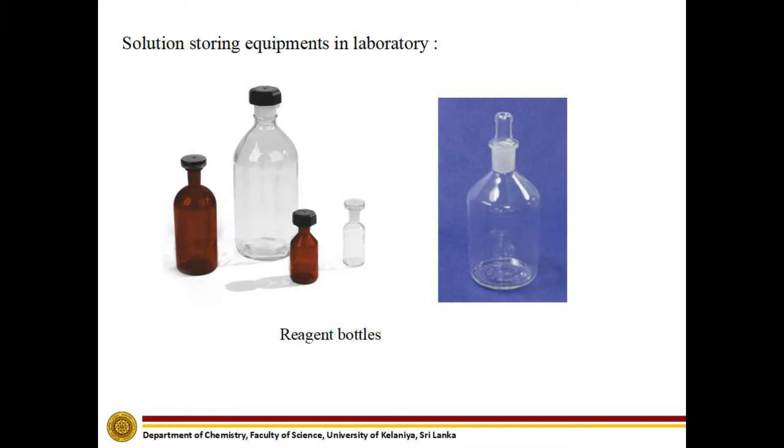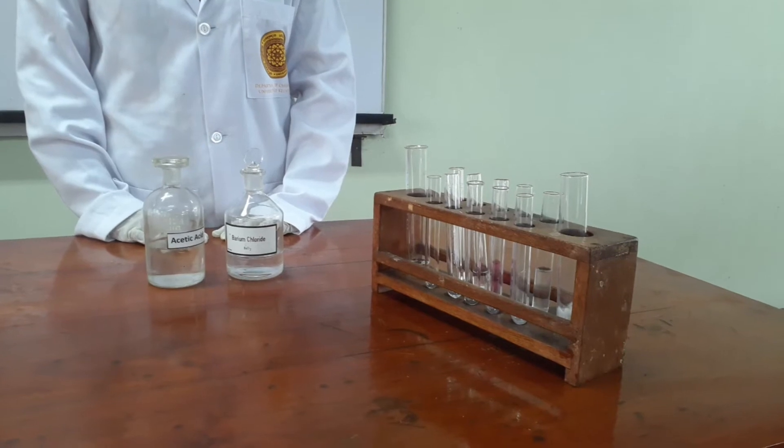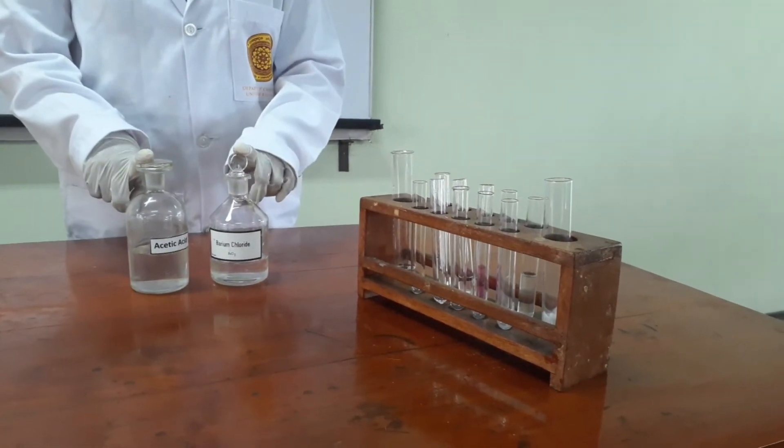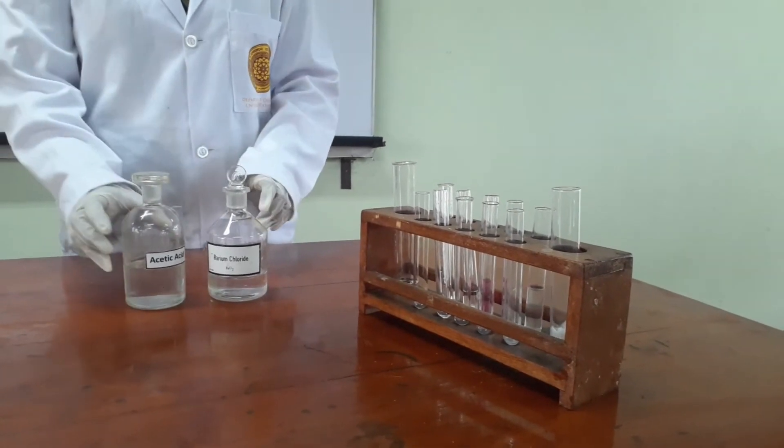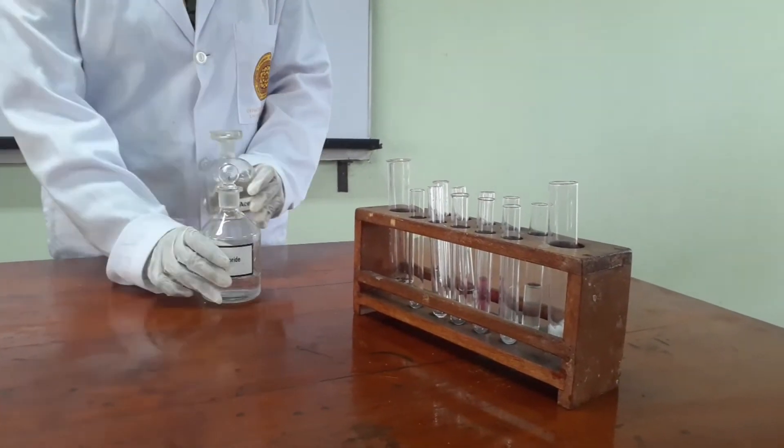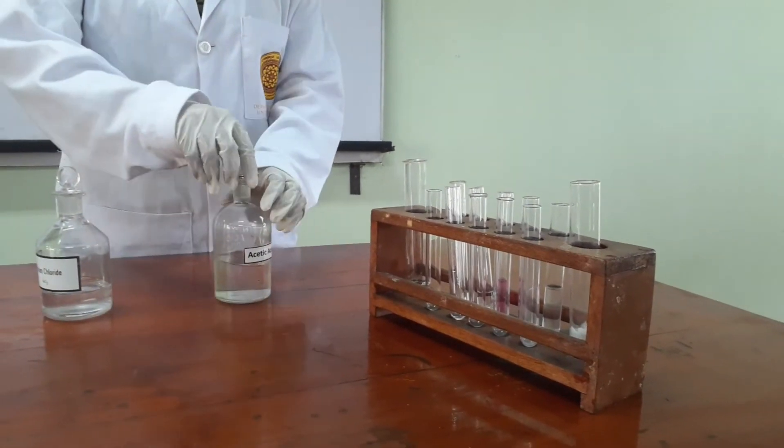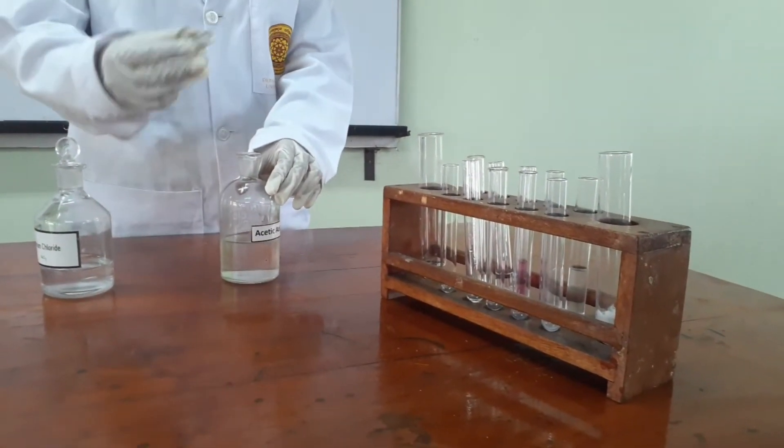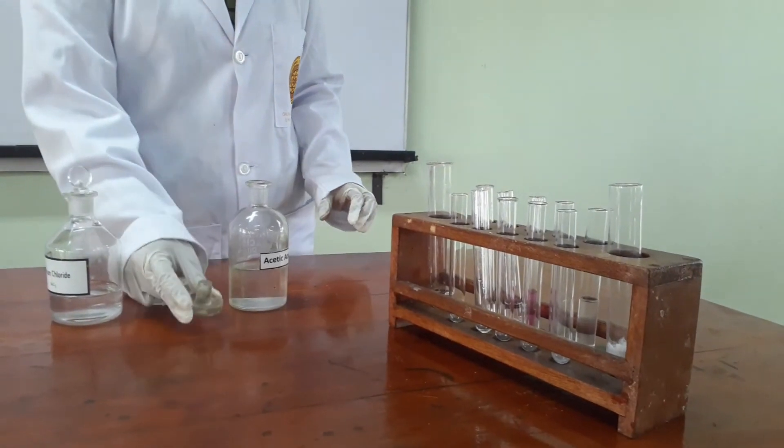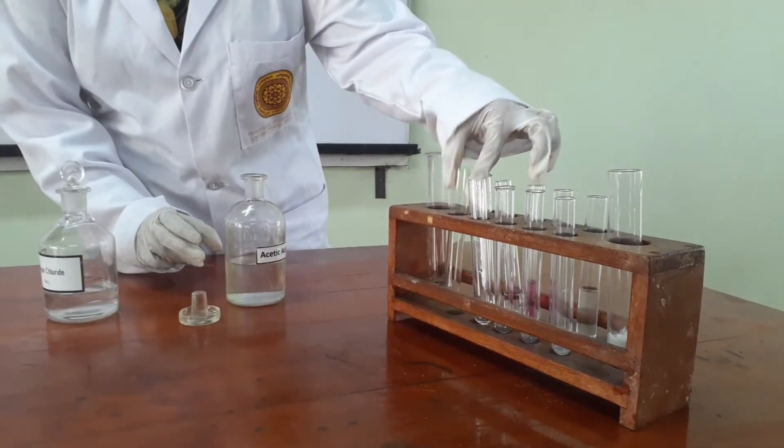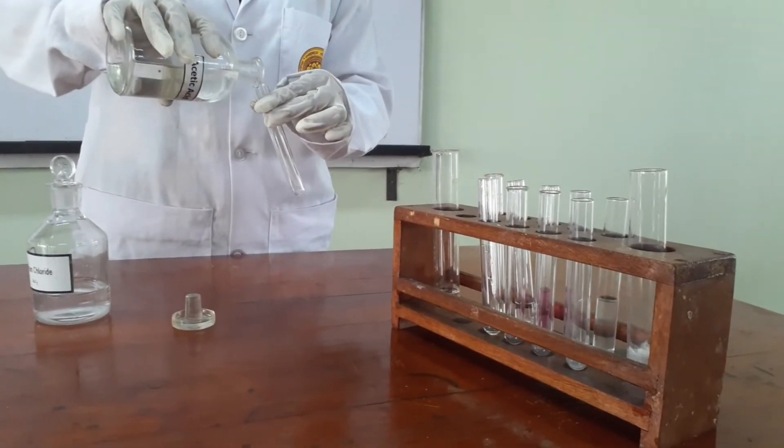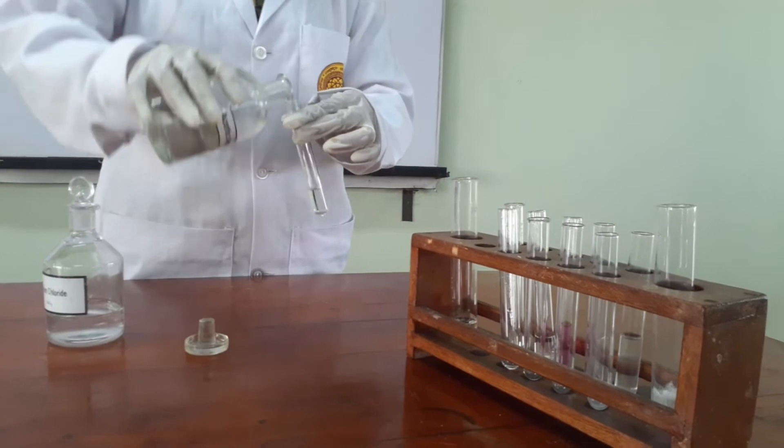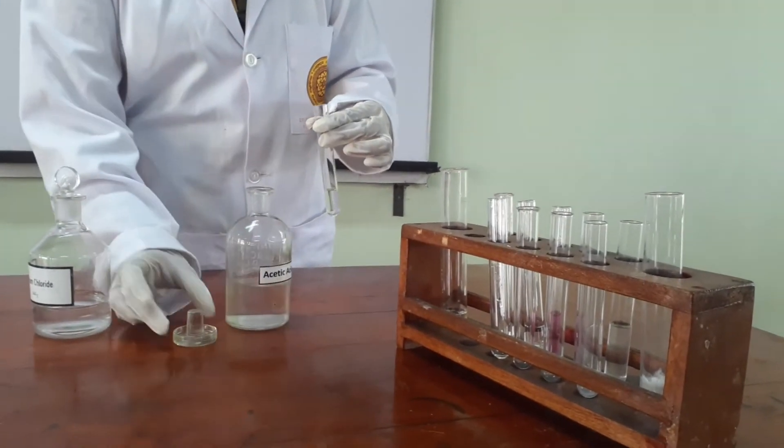Solution storing equipment that we use in our laboratory. We use two types of reagent bottles to store reagents in a laboratory. When we are using this reagent bottle, we remove the cap like this and place it on the table like this in order to avoid contamination. Then we pour the solution into a test tube and take whatever amount that we need by using a dropper.